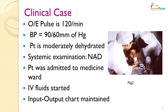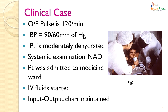On examination, pulse was 120 per minute. Blood pressure was 90 by 60 millimeters of mercury. The patient was moderately dehydrated. Systemic examination showed no abnormality. The patient was admitted to the medicine ward. Intravenous fluids were started and an input-output chart was maintained.